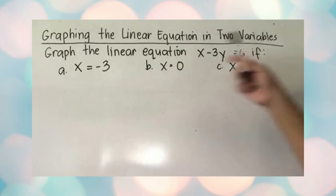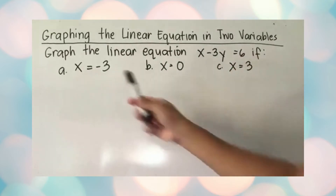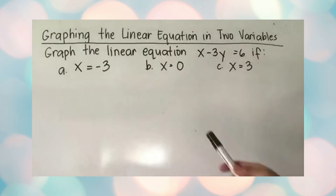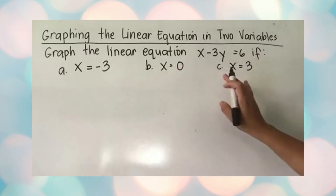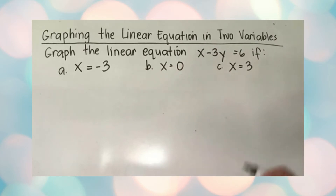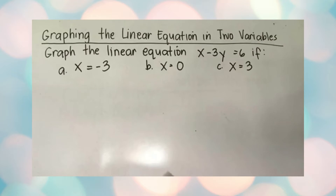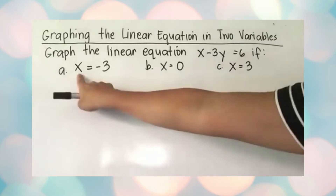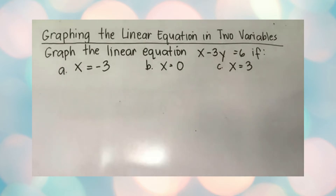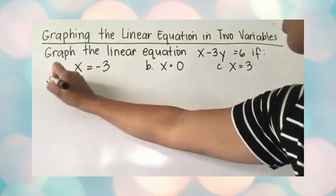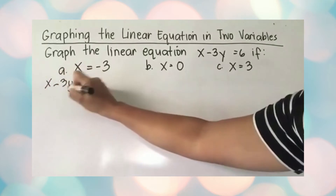We will use three values: x is equal to negative three, x is equal to zero, and x is equal to three. By computing each, we will be able to get three points that we can plot on the graph. Let's start computing with the first value.